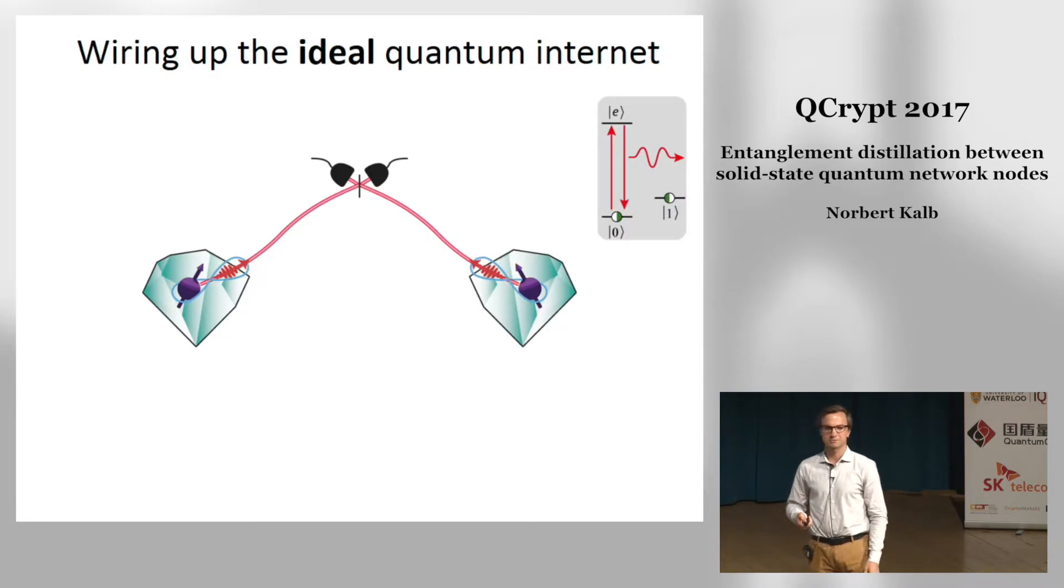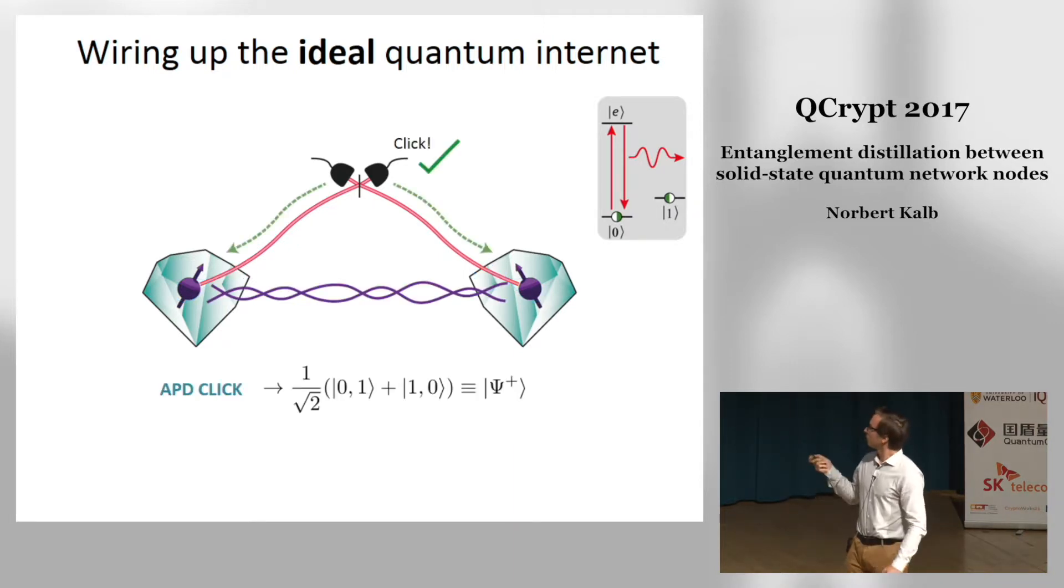How do we wire our quantum internet up? Typically we have two diamonds each hosting one NV center and via the optical interface that is spin selective we generate spin-photon entanglement. The spin of the NV center is entangled with the photon and the photonic wave packet then travels towards this beam splitter in the center. It interferes and is subsequently detected by a detector. If we then forward the heralding of a detection event to our NV centers we obtain a perfectly entangled state.